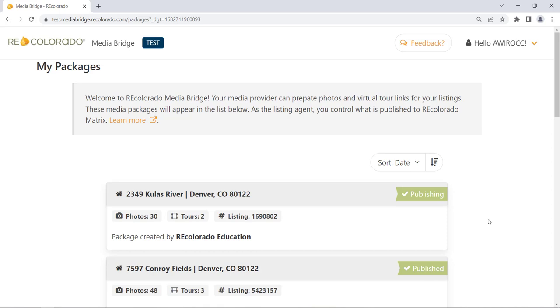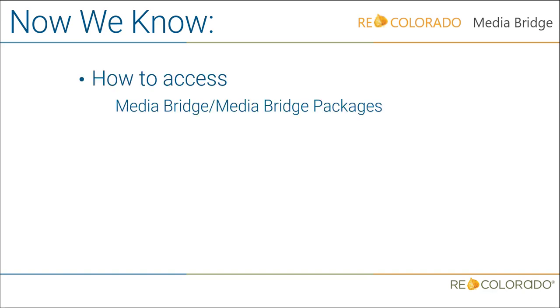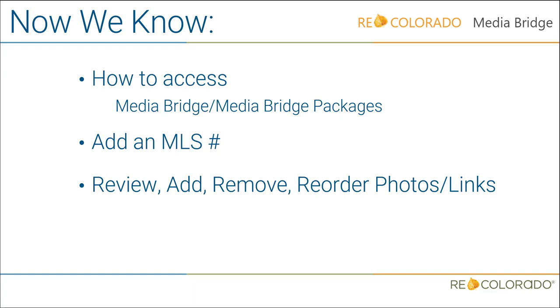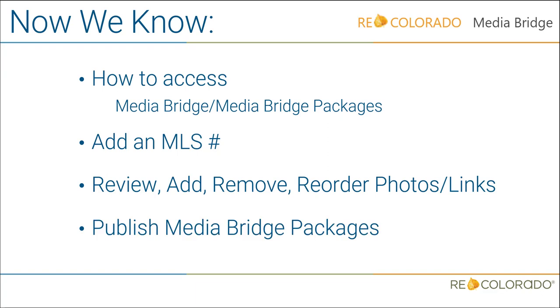In the future, you can make changes to your listing photo order and captions either through Media Bridge or Matrix. Remember, changes made in Media Bridge only present in Matrix after clicking the Publish to Listing and Agree and Publish buttons. You now know what Media Bridge is, how to access it, how to access your packages, how to add an MLS number when necessary, and how to review, add, remove, and reorder photos and links, as well as how to publish Media Bridge packages to your RE Colorado listings in Matrix.